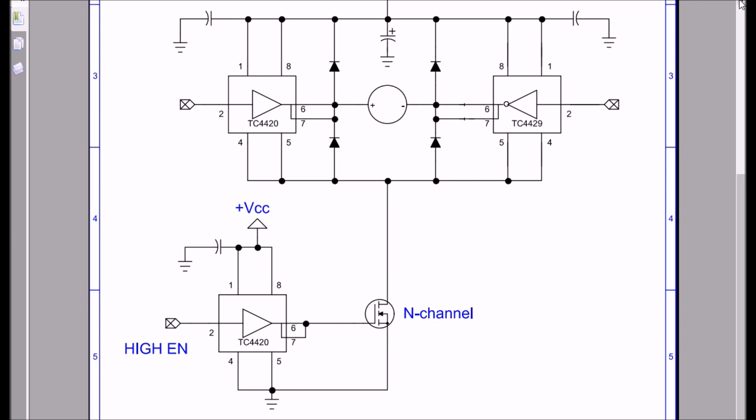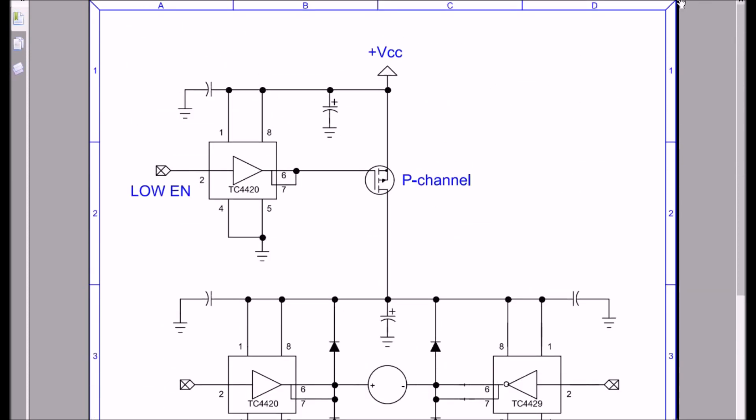As an alternate setup, you can ground this side. Then you can connect this with either a 4420 or a 4429. Just remember your input level, and you could use a P-channel and use it as a high side switch.